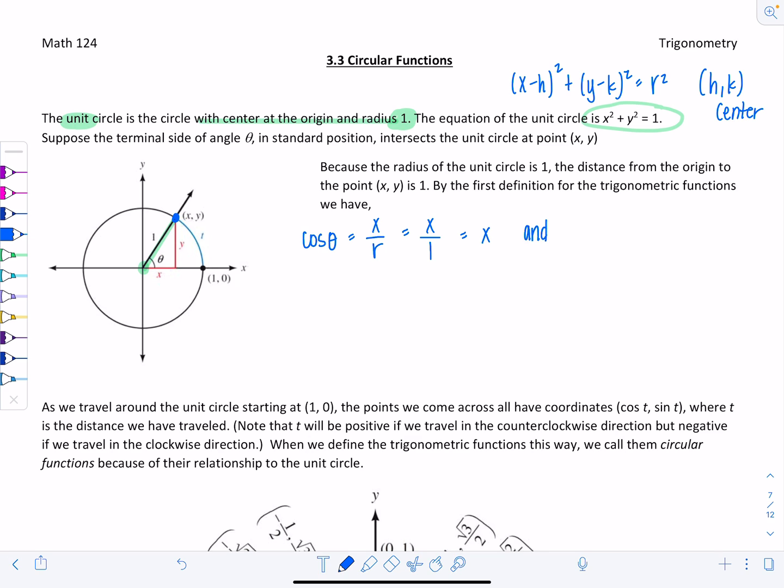Also, sine of theta, which equals y divided by r, in this case would be y divided by 1, which is y. This is very special because on a unit circle, x and y corresponds to cosine of theta and sine of theta. The cool thing is, it's in alphabetical order. x comes first in the alphabet, just like c comes before s. x, y, cosine theta, sine theta.